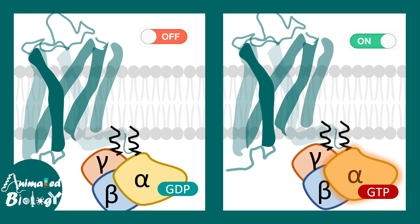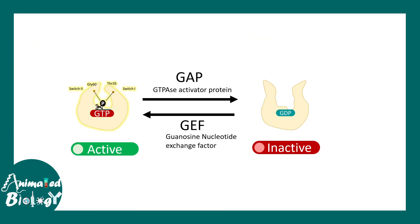The GαS subunit has two configurations: GDP-bound, which is the off state, and GTP-bound, which is the on state. Switching between these two turns signaling on and off. Certain molecules known as GTPase activating proteins (GAPs) chop off a phosphate group from GTP, converting it to GDP — acting as a switch-off agent.